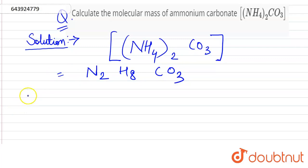Now, the molecular mass of nitrogen is 14 multiplied by 2, plus the molecular mass of hydrogen is 1 multiplied by 8 because 8 atoms are present, plus the molecular mass of carbon is 12, and the molecular mass of oxygen is 16 multiplied by 3 because 3 oxygen atoms are present.